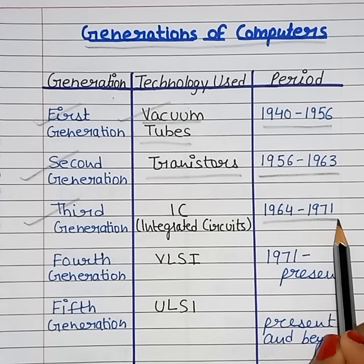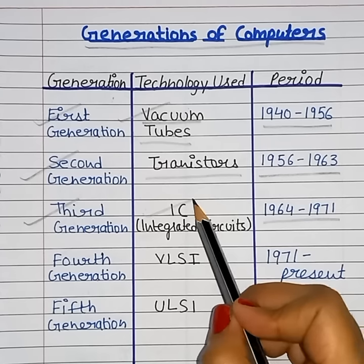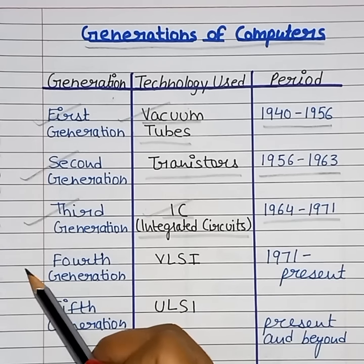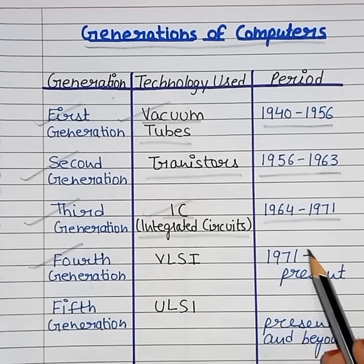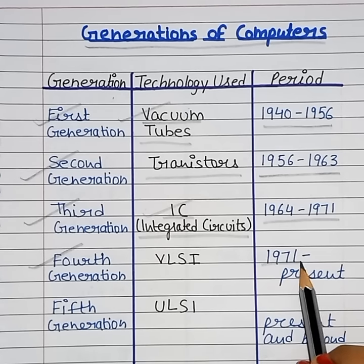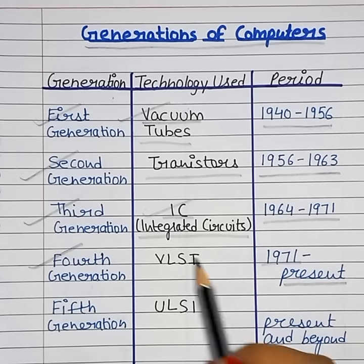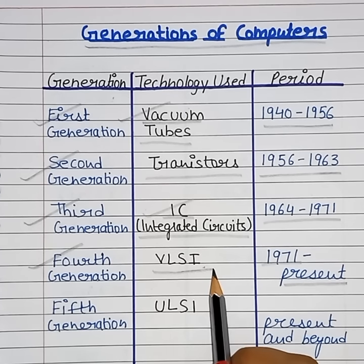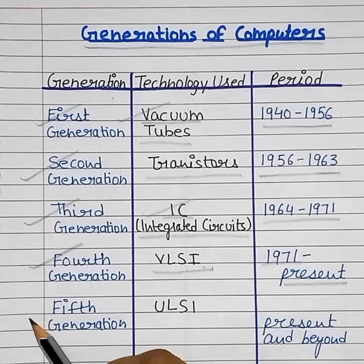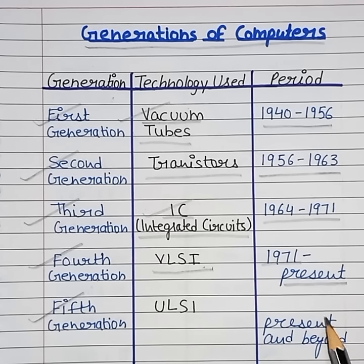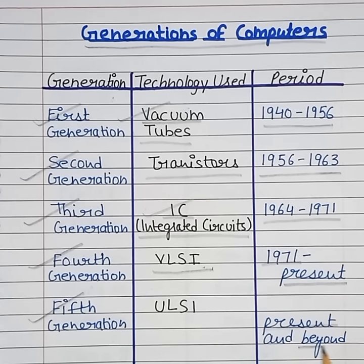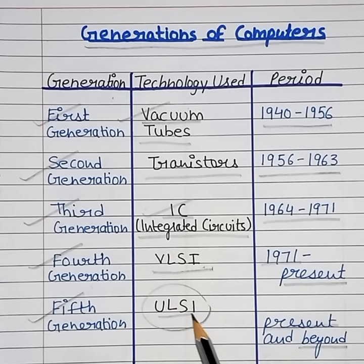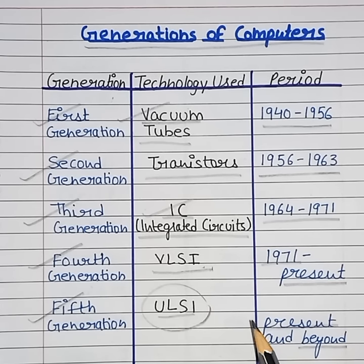...1971, component used: IC, integrated circuits. Fourth generation computers, period 1971 to present, component used: VLSI, very large scale integrated circuits. Fifth generation computers, period present and beyond, component used: ULSI, ultra large scale integration.